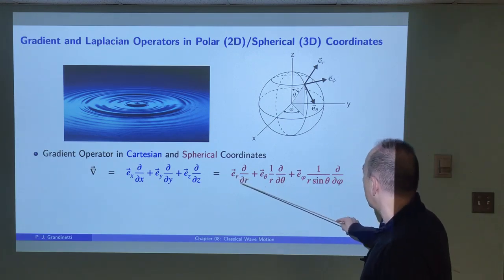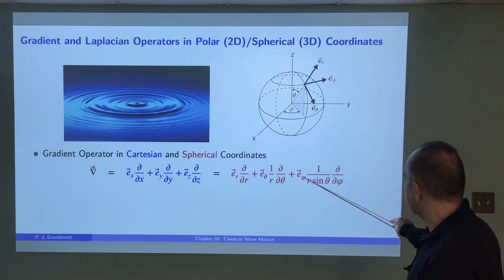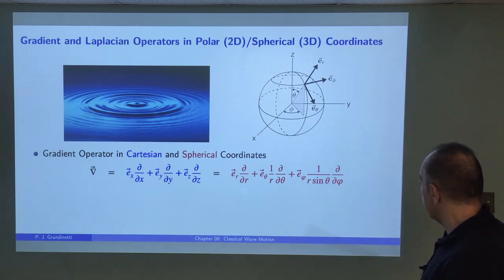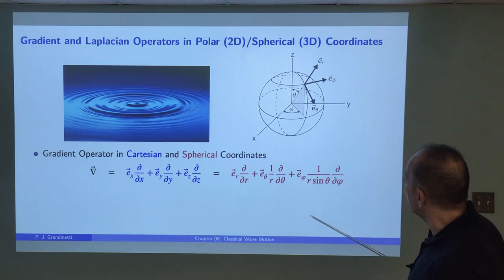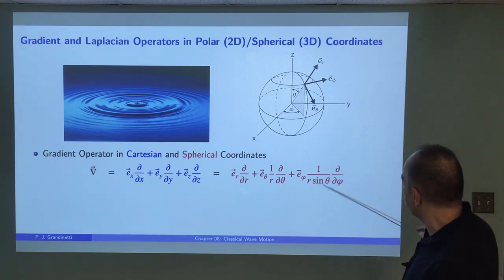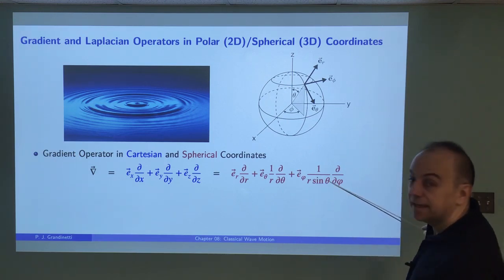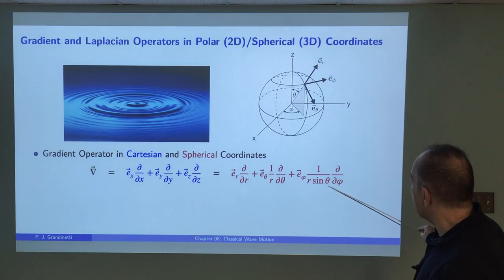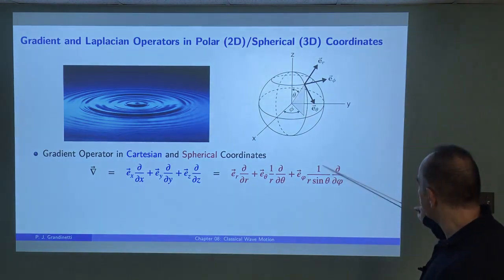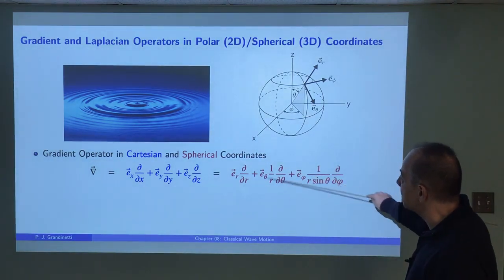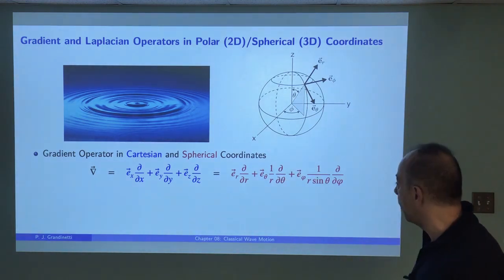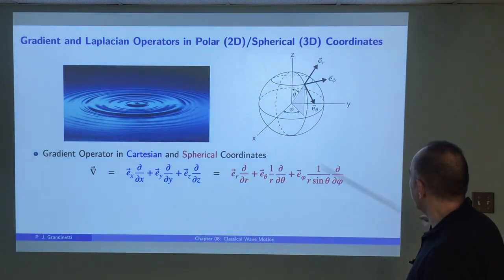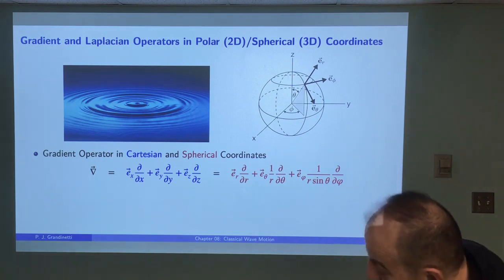So here you see there's unit vector e_r, unit vector e_theta, and unit vector e_phi, times these partial derivatives. The polar coordinate case is just the special case where theta equals 90 degrees. Since sine of 90 degrees is 1, that term becomes 1, and since theta is constant, the theta derivative term goes away — giving you the polar form with just those remaining terms.